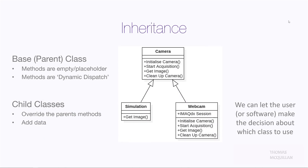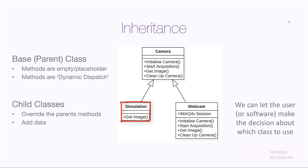Let's have a look at a different example. Here we have three classes: a camera class, a simulation class, and a webcam class. The base class or parent class contains four methods — initialize camera, start acquisition, get image, and clean up camera — and those four methods are completely empty on their block diagram; they have no functionality. They are dynamic dispatch methods, which means the child classes of simulation and webcam can take those methods and override them. The simulation class is overriding get image, and the functionality it will do is load an image from file and display it on the screen. Whereas the webcam has decided to override all four methods because it actually needs to interact with the hardware. The data required to interact with that hardware is the IMAQdx session reference, which you can see in the middle box of the webcam class.